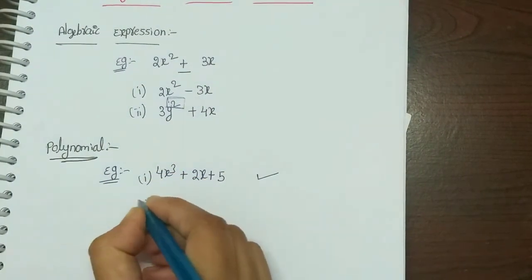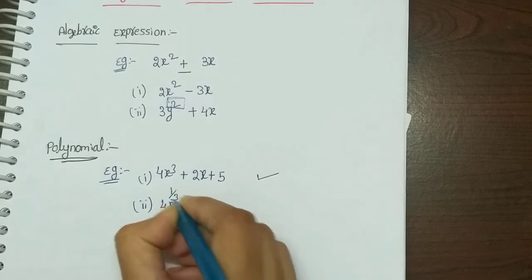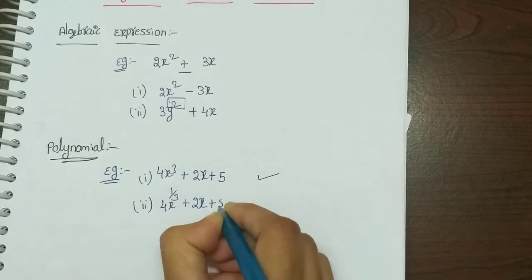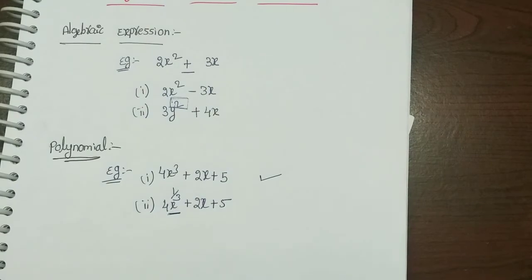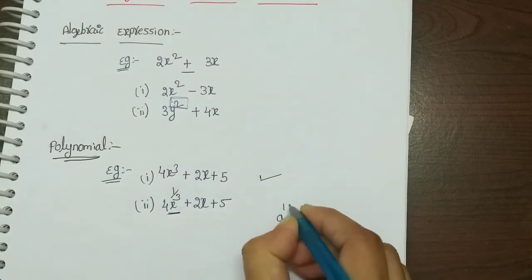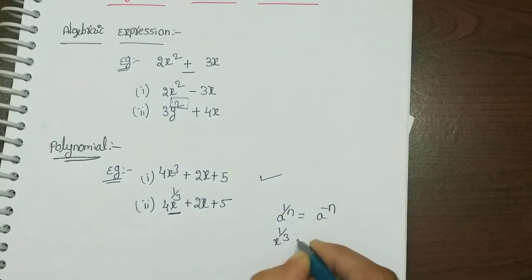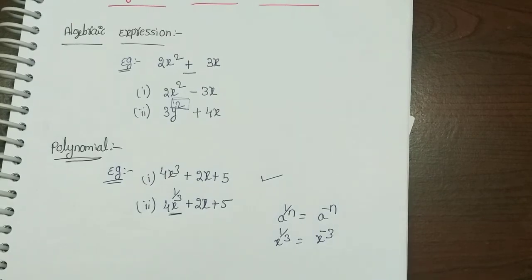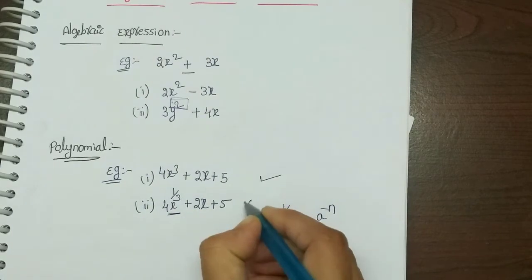Let's take another example: x to the power 1/3 plus 2x plus 5. The variable's power here is 1/3. We have a power of the form 1/n or minus n. So the exponent of x is a non-integer value. So this is not a polynomial.